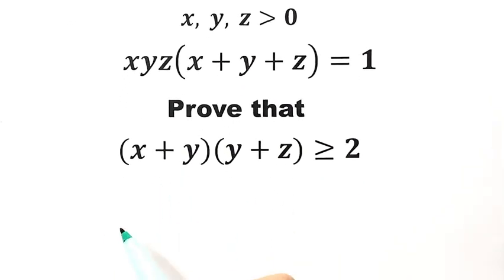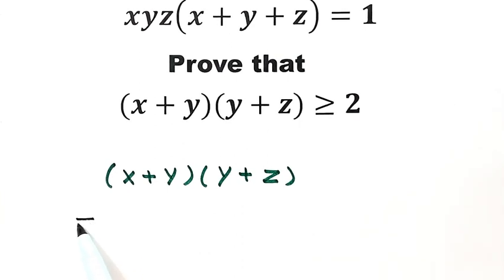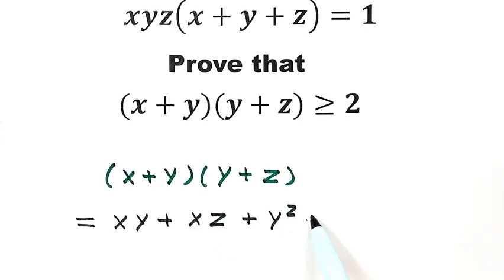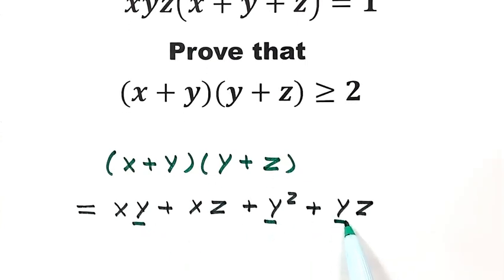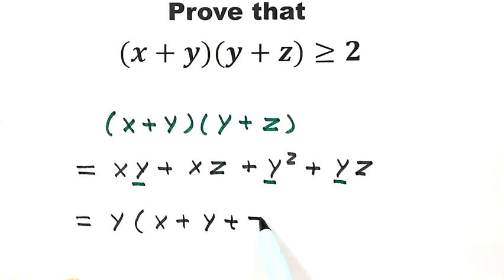We're going to start from here. x plus y times y plus z. Let's expand the product. That equals xy plus xz plus y squared plus yz. Since here we have common factor y, let's take out the common factor: y times x plus y plus z, then plus the last term xz.